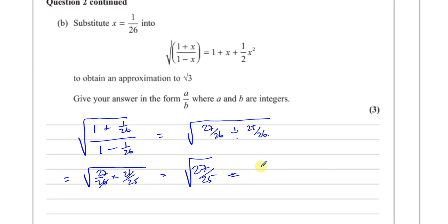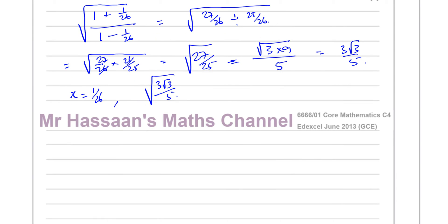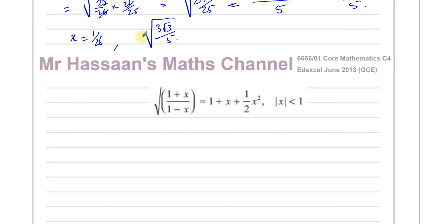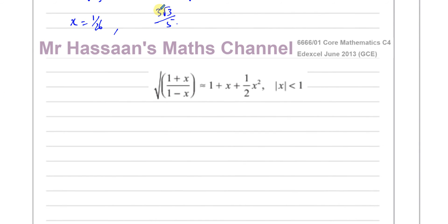The square root of 27 is 3 root 3 because 27 equals 9 times 3, and the square root of 25 is 5. So putting x equals 1 over 26 into the left-hand side gives 3 root 3 over 5. This means we can equate 3 root 3 over 5 to the expansion evaluated at x equals 1 over 26.